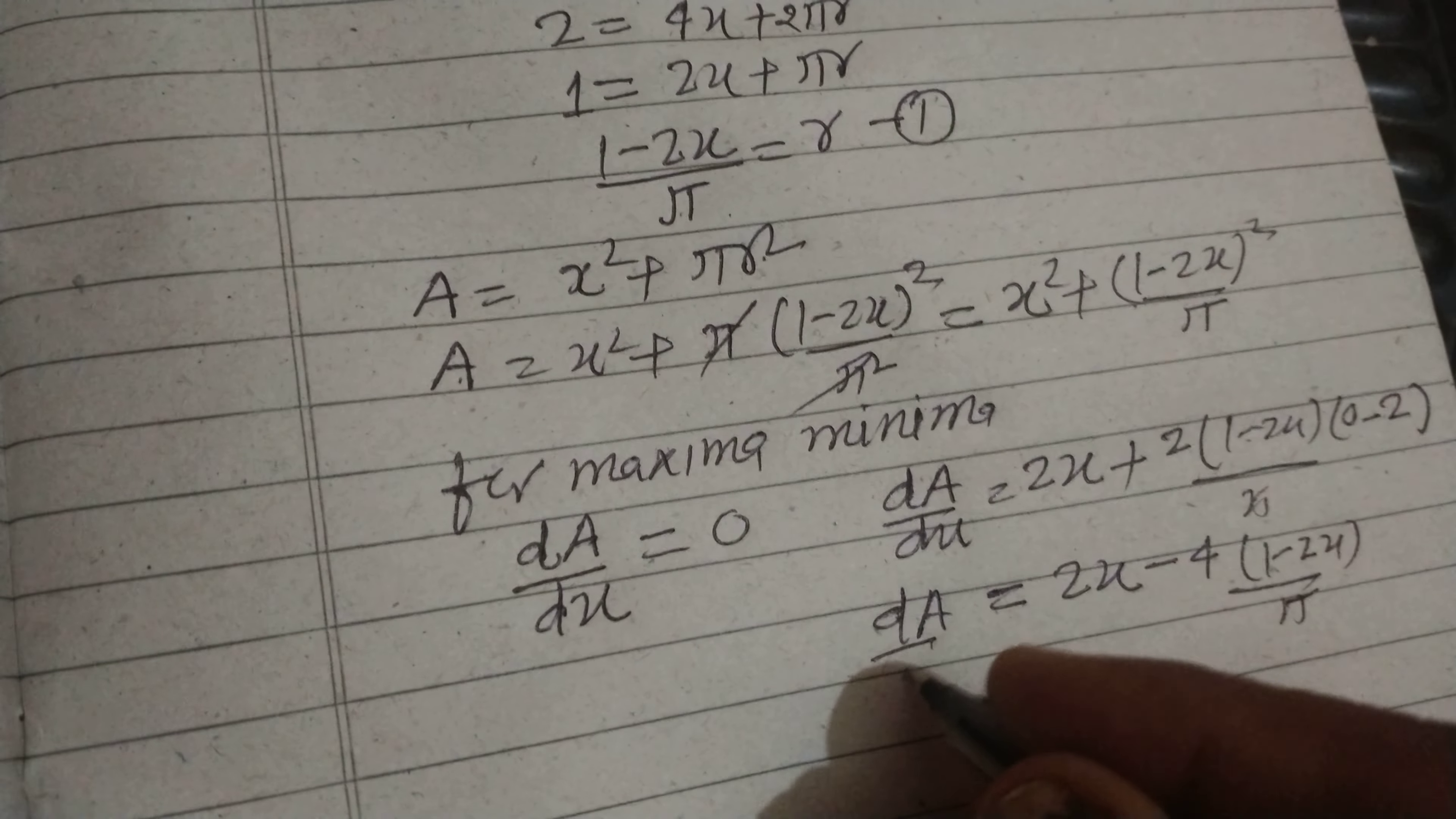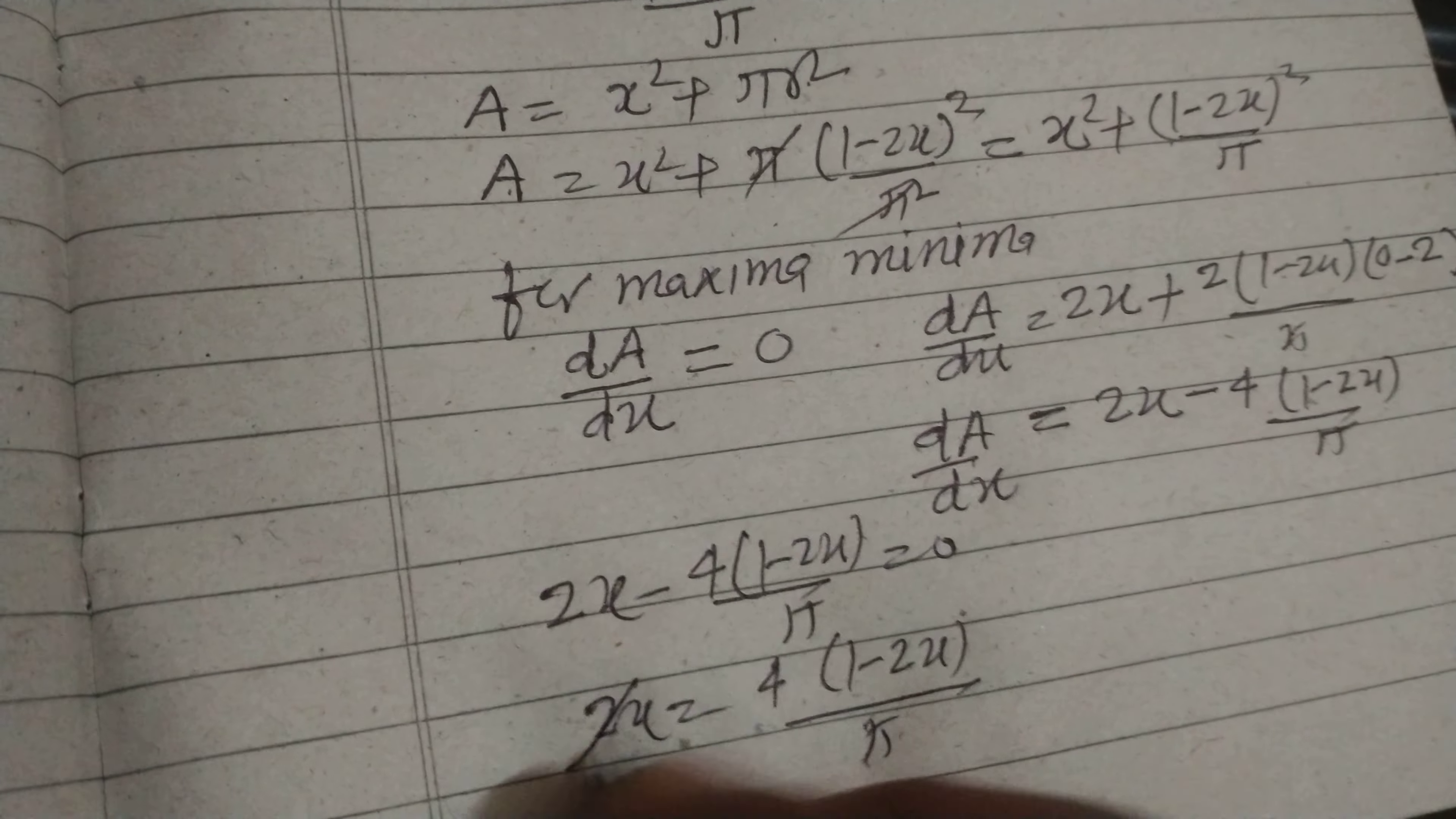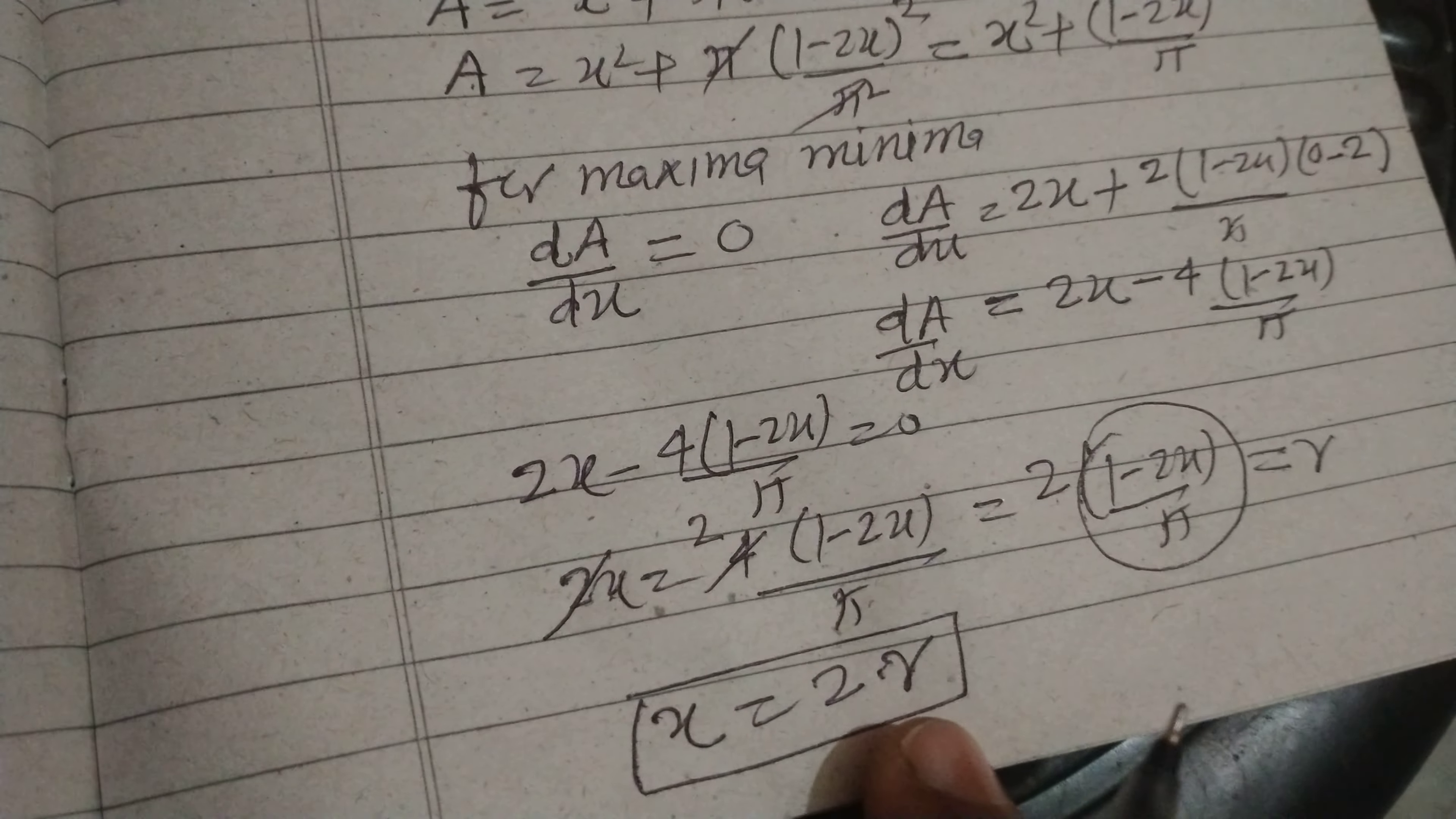So for maxima and minima we put this value equal to 0: 2x - 4(1 - 2x)/π = 0. 2x = 4(1 - 2x)/π, which simplifies to 2x = 2(1 - 2x)/π. And from the first equation we know that (1 - 2x)/π is r. Therefore x = 2r. So the relation between x and r is x = 2r.